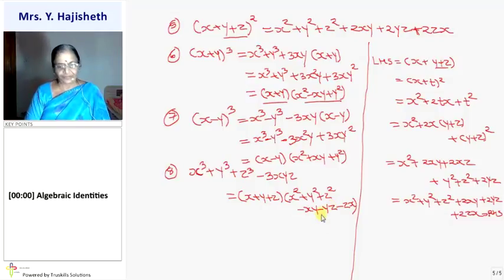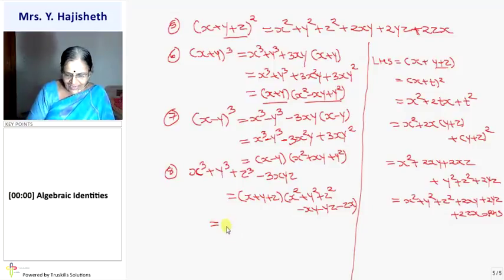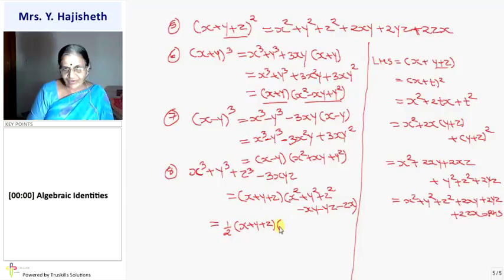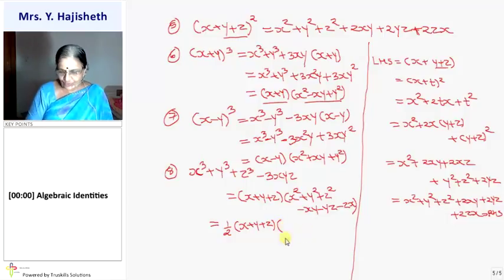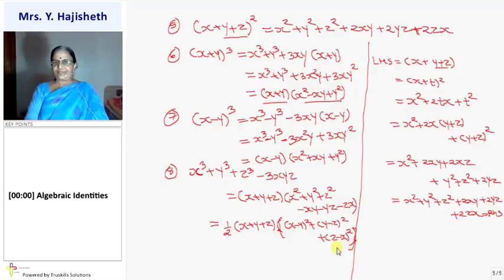The another formula, given as a sum in your revision exercise 2.5, is one half times (x plus y plus z) times the quantity: x minus y whole square plus y minus z whole square plus z minus x whole square. This is a modified form of the eighth formula — another form of it — and we are going to prove it as a sum in exercise 2.5.